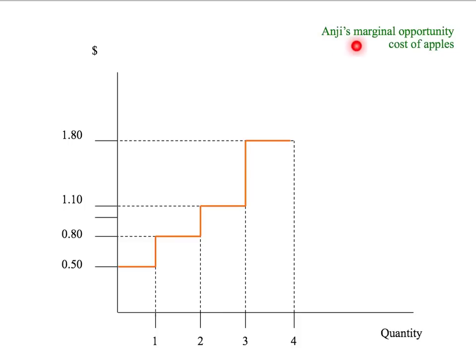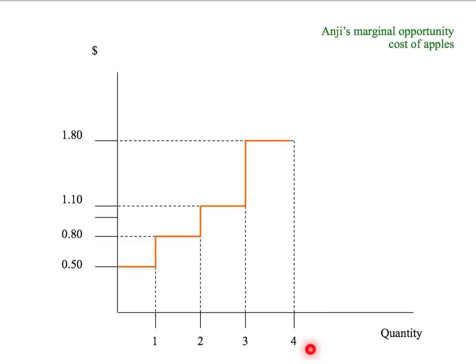We were looking at Angie and her marginal opportunity cost of apples. She starts with four apples. The opportunity cost to Angie of giving up a first apple was $0.50. Giving up a second apple, given she's already given up one, the opportunity cost is $0.80. The opportunity cost of giving up a third apple is $1.10, and the opportunity cost of giving up her last or fourth apple, given she's already given up three, is $1.80.